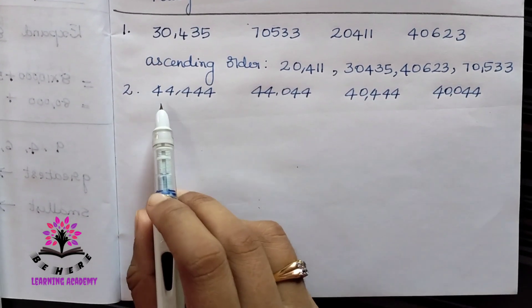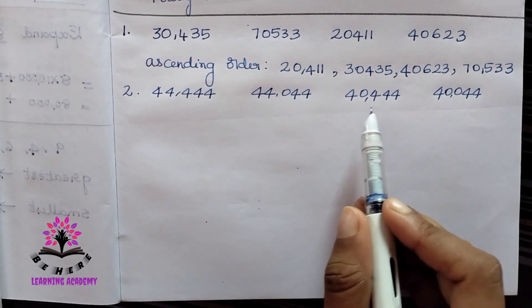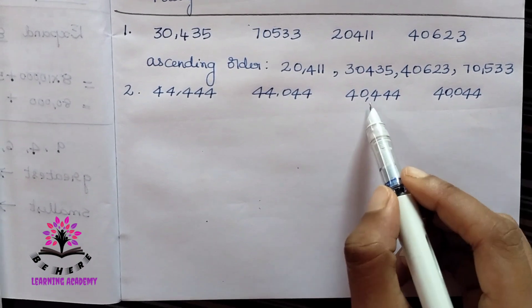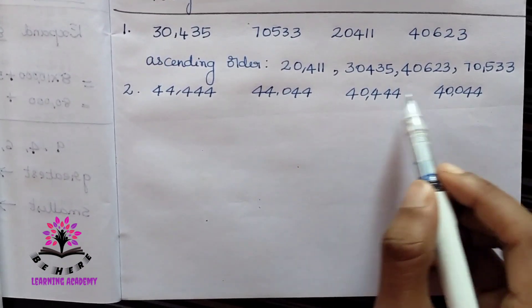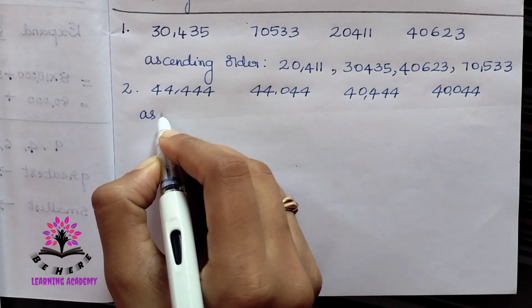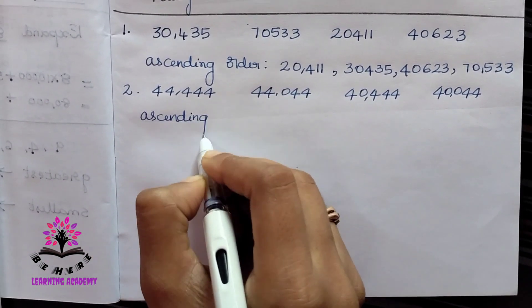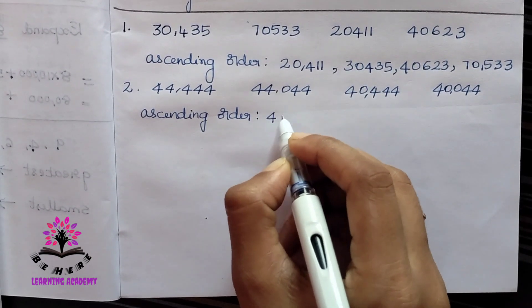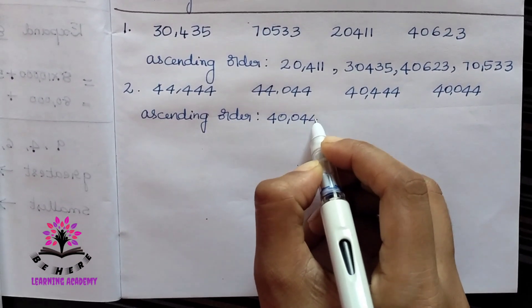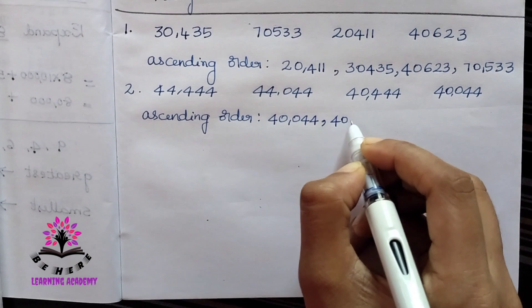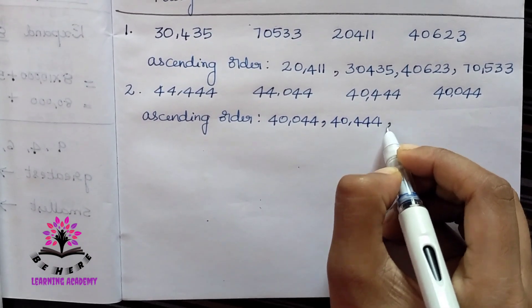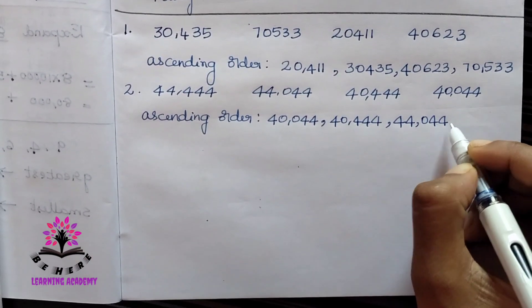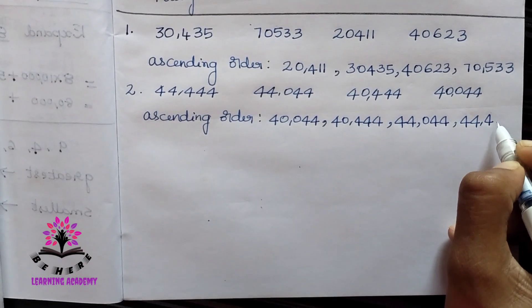Second set: some numbers are in the 44,000 range and some in the 40,000 range. When you compare the 40,000 range numbers: 40,000 is the smallest. So ascending order: 40,000 — 40,444 — 44,044 — 44,444.